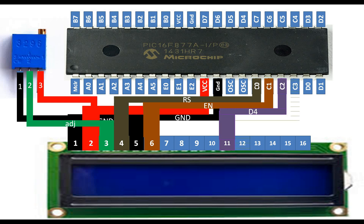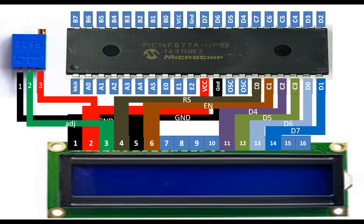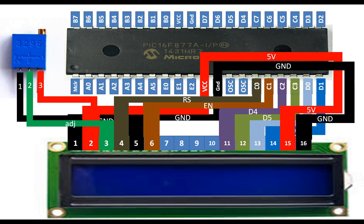D5 I connect to C3, D6 I connect to D0, and data pin D7 goes to pin number 20 of the PIC, which is D1. Now pin number 15 and 16 are for the backlight of the LCD. Connect pin 15 to the 5-volt supply and pin 16 to common ground — this turns on the backlight. If you leave these two pins unconnected, the LCD will still work but there will be no backlight.